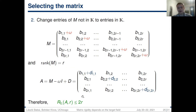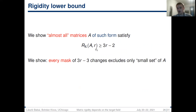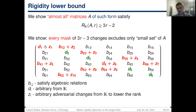All that remains is to prove a lower bound for matrix A of this form. We show that almost all matrices of this form satisfy the required lower bound. Specifically, we want to show that for every mask of 3r − 3 changes, this mask excludes only a small set of constructed matrices A. The adversary starts with some matrix B, changes diagonal entries D, and then applies a pattern of 3r − 3 changes to try to get a matrix of lower rank. We want to show that for any such mask, the adversary can succeed for only a small set of choices of A. Since the finite union of small sets is still small, a good choice of D always exists.